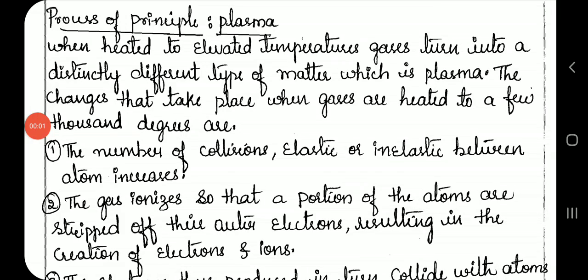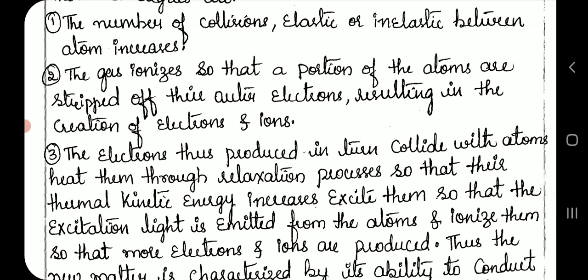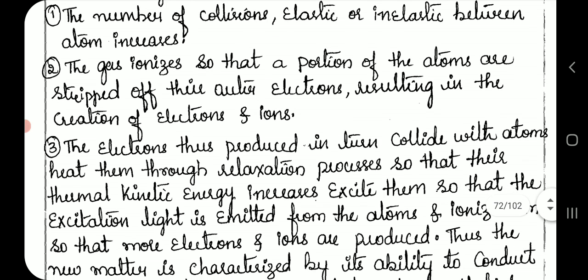Principle of plasma: when heated to elevated temperatures, gases turn into a distinctly different type of matter, which is plasma. The changes that take place when gases are heated to a few thousand degrees include an increase in the number of collisions, elastic or inelastic, between atoms. The gas ionizes so that a portion of the atoms are stripped of their outer electrons.